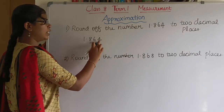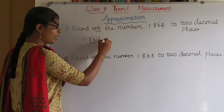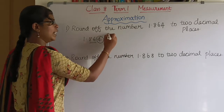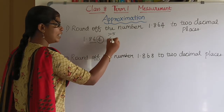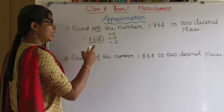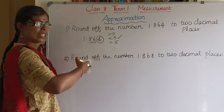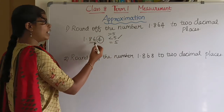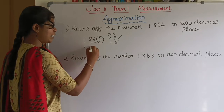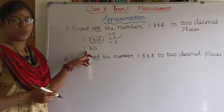We look at the third digit. Let's check: is 4 greater than 5, less than 5, or equal to 5? 4 is less than 5, so we leave it as is. The answer is 1.86. This is rounding off.